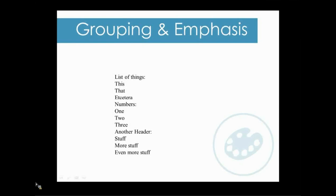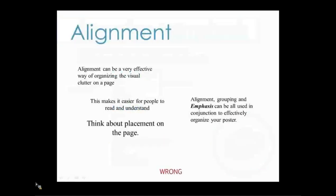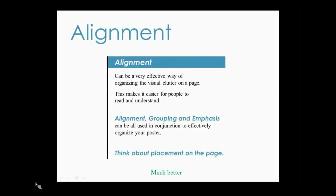A common mistake is not spacing text effectively. Make it easier to digest by grouping like things and emphasizing key points. Physical closeness implies relationship, and emphasis calls attention to important points — do not be afraid to make certain text big and bold. Here is an example of an issue seen frequently in scientific posters: sections are placed without aligning them or having spatial relationships with other objects on the page. Remember your initial grid and let it help you keep things aligned — see how aligning everything makes it look better and easier to follow.